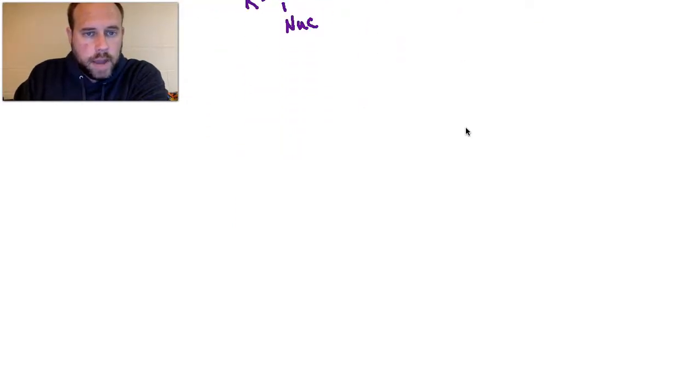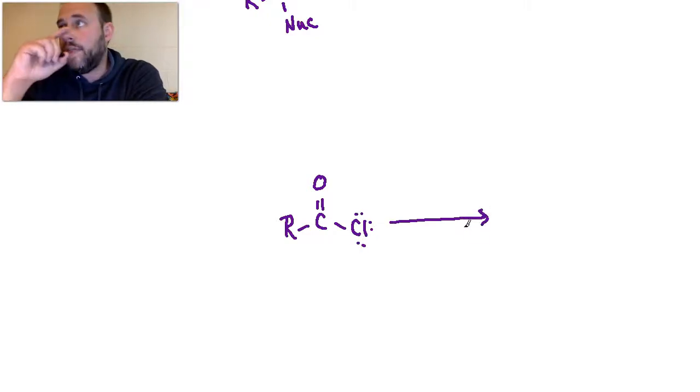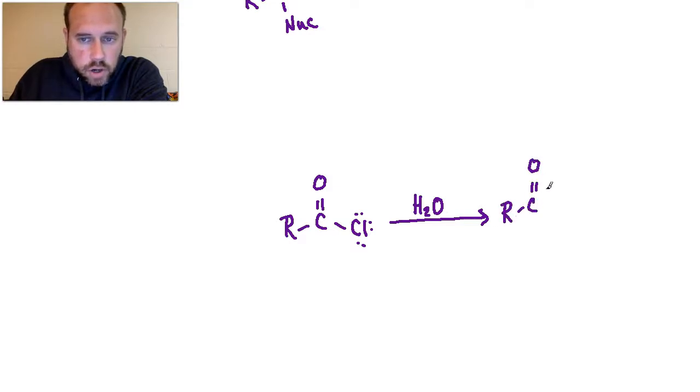So the chlorine is going to leave, and we're going to reform the pi bond when that happens, and then as a result, what we can end up with is we've got that R-C double bond O functionality, and then whatever we added as the nucleophile. So you can see, that's why it's kind of easy to make anything else on the list, because all I have to do is find some reagent that can potentially act as a nucleophile in that case, kick the chlorine off, and then I've got whatever I want, my amide, my ester, and so on.